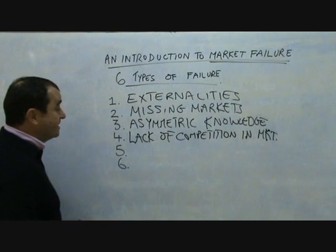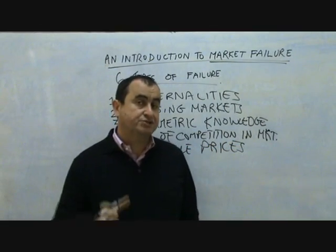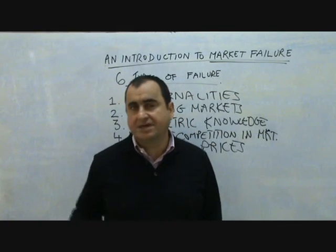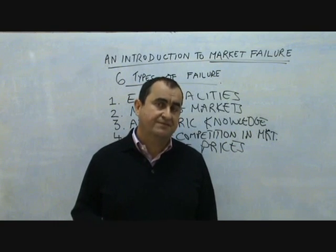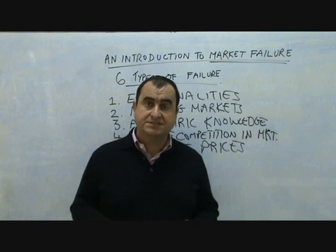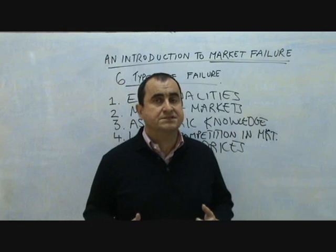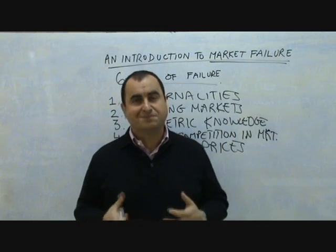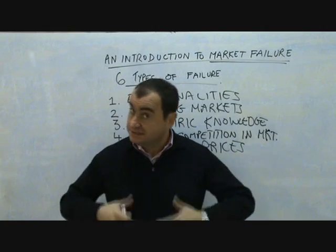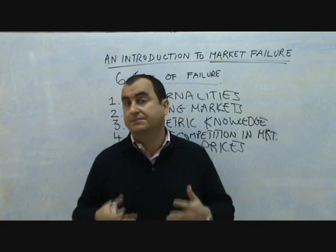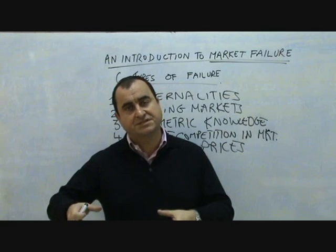Our fifth type of market failure is unstable prices. This particularly applies to commodities — any naturally occurring substance such as agricultural products, but also minerals, metals, and fossil fuels. These tend to suffer very unstable prices, with much more frequent fluctuations — rises and falls — than with manufactured goods. This creates a particular problem for suppliers of these commodities because they cannot plan with any certainty on what revenue they're going to receive, making it difficult to plan investment spending and potentially leading them to quit the market. Because commodities are the base of everything, this feeds into price fluctuations of manufactured goods as well.